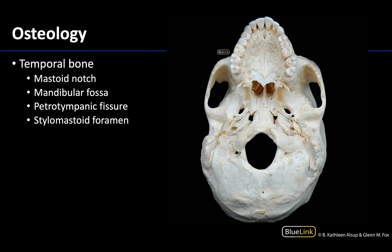Now looking at an inferior view of the cranium, let's first start with a muscle attachment site which is going to be the mastoid notch, located right there. It's going to be a deep groove medial to the mastoid process, and this is an attachment site for the posterior belly of the digastric muscle.